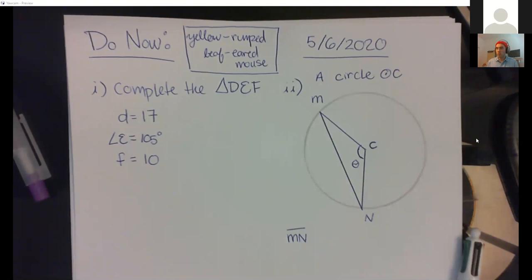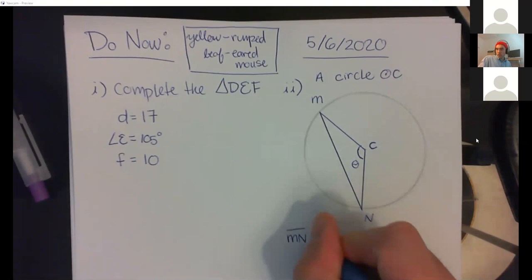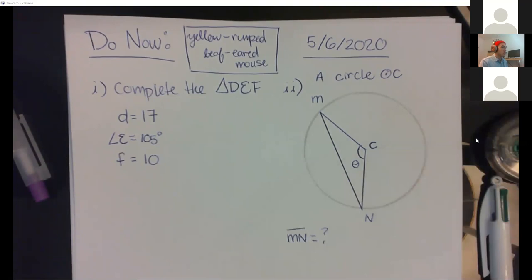We are looking for an opposite angle pair. If it's a triangle ABC, we need angle A paired with side a, or angle B with side b, or angle C with side c. You need one of those pairings for the law of sines to work; otherwise you must default to the law of cosines.